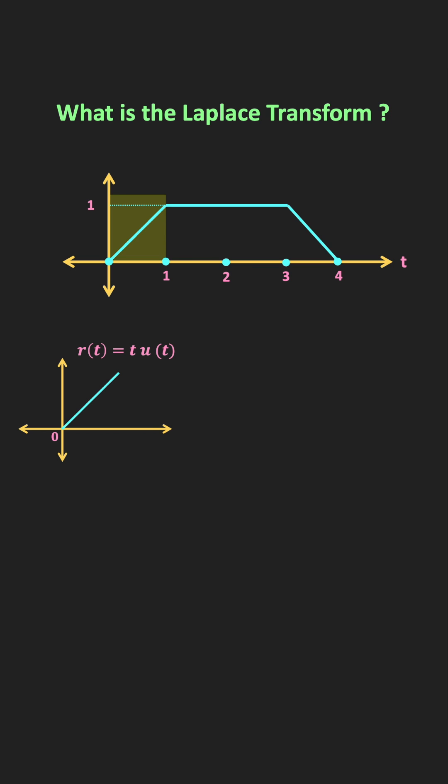Now during the time 1 to 3, the slope of this function is equal to 0. We can get that by adding a ramp function at time t equal to 1, which has exactly opposite slope of R, and mathematically that is equal to minus R.